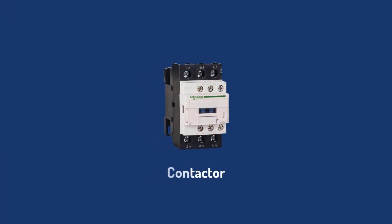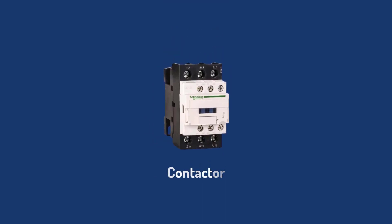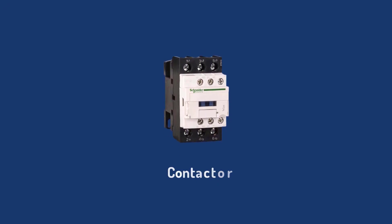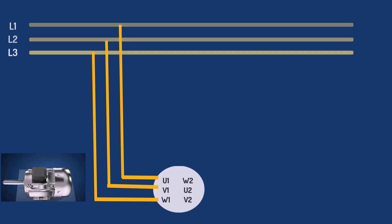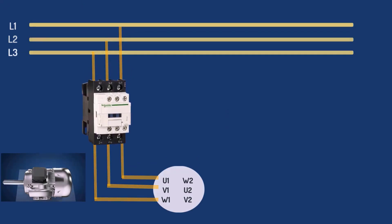Now let's understand what a contactor is and how it helps us in star delta starters. A contactor is a device that switches on or off an electrical power circuit. For better control, we will add a contactor between the motor and three-phase supply. We will call this the main contactor.